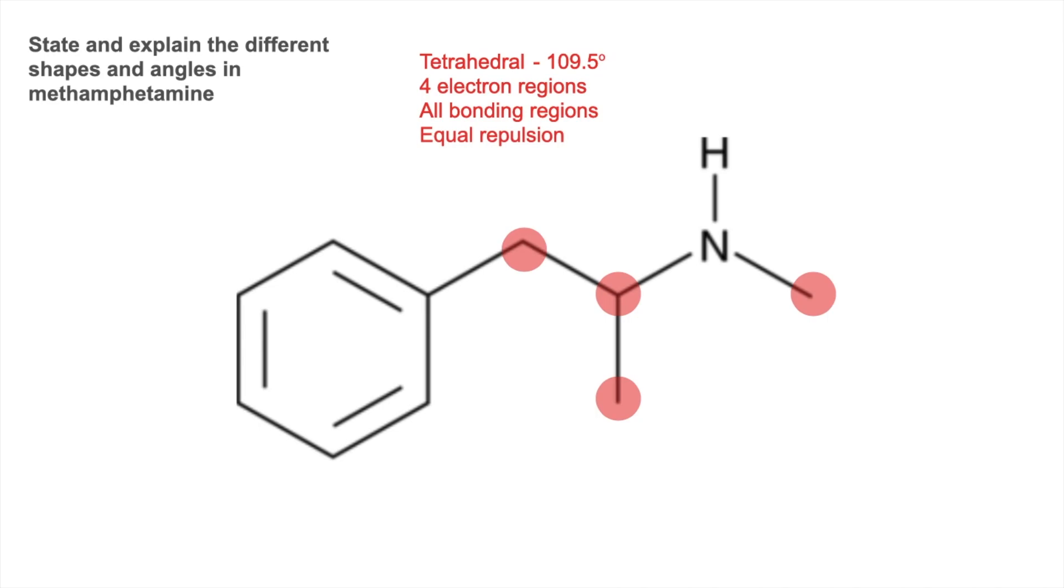The next set of atoms we'll look at are these here. These are all the same shape and angle and they are trigonal planar, 120 degrees. And the reason for that, three electron regions, all bonding regions, equal repulsion.